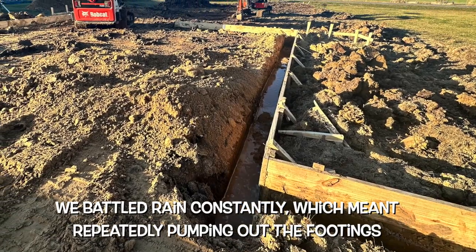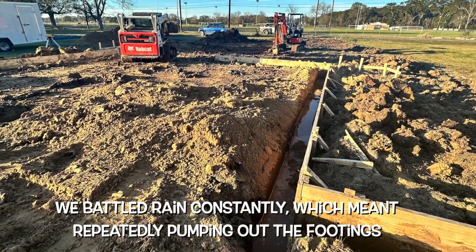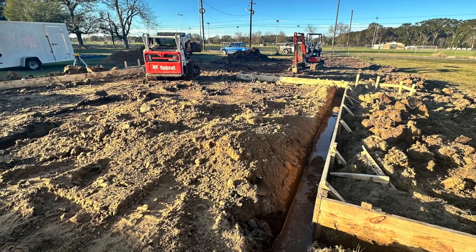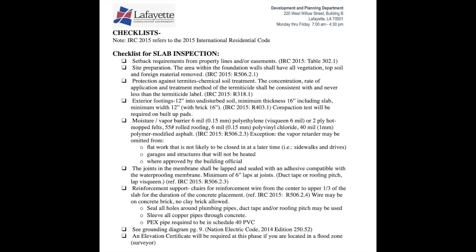We trench around the outside walls and any exterior walls. The inspector sent me the checklist — it's the 2015 IRC code, which Lafayette was still using in 2022 even though they were about to change. This covers grounding the slab, the vapor barrier on top, how deep the footings have to be, and how wide. It's very important to check with the inspector, make sure you know what you're doing, and have all the specs correct.